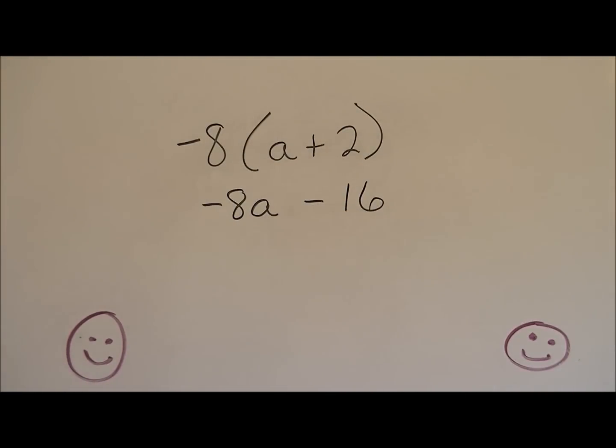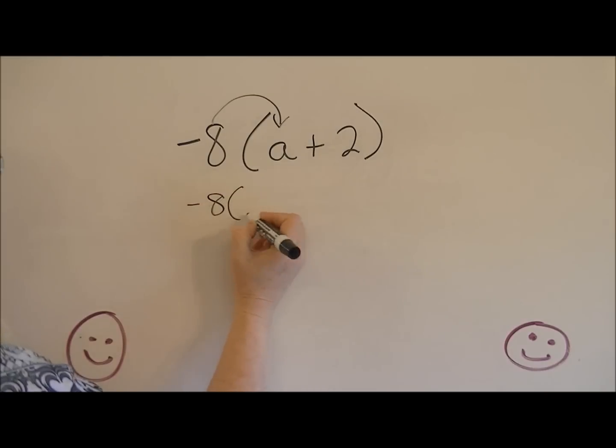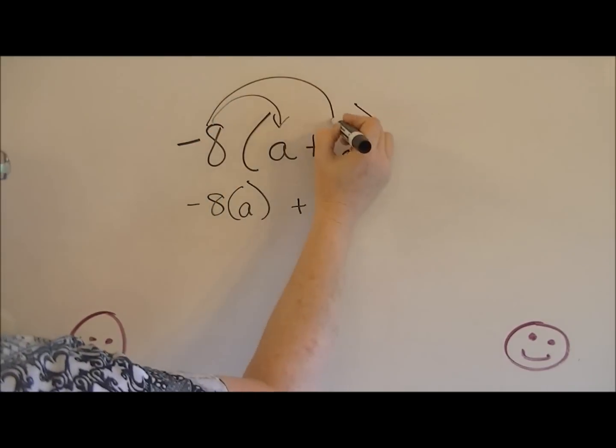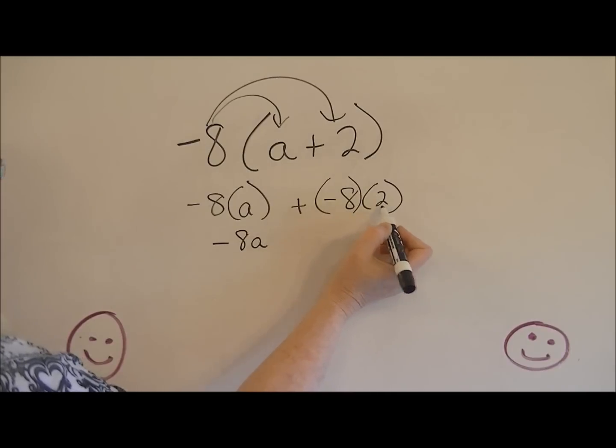Let me show you another way that you can think about this problem. You can think of it negative 8 times a, negative 8 times a, and then plus negative 8 times 2. And then negative 8 times a is negative 8a, and then negative 8 times 2 is negative 16.